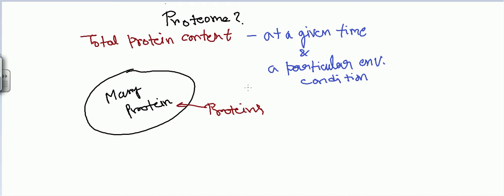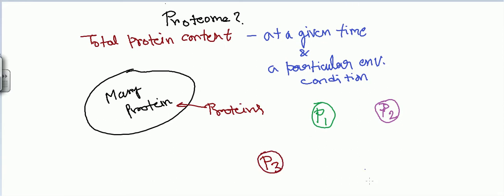Not a single protein can do all the jobs inside the cell, so we require many proteins. Let's say we have protein 1, protein 2, protein 3, protein 4 — which is a degradative protein — and protein 5. Some proteins help in transport, some in transcription, and some in movement of molecules from one place to another. Everything inside the cell is controlled by proteins.